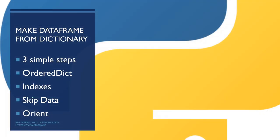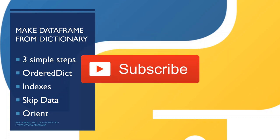In this Python pandas tutorial we have learned three simple steps to make a data frame from a Python dictionary. We learned how to create a data frame from an OrderedDict, how to create custom indexes, how to skip data using the columns argument, and how to change columns into rows using from_dict. Hope you learned a lot — make sure you subscribe to the channel if you haven't. Bye!